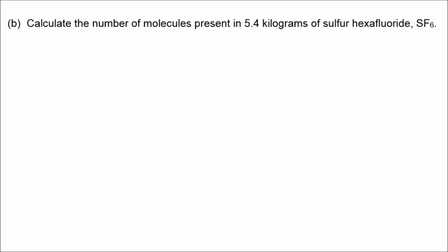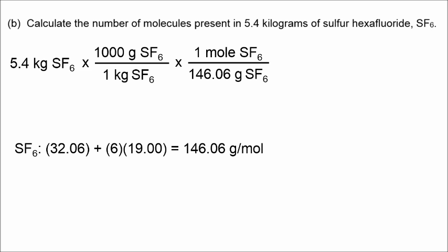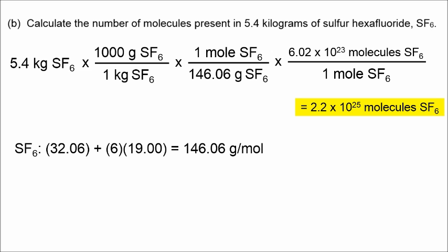All right. This is still number 9, B. We're going to convert from 5.4 kilograms of sulfur hexafluoride into molecules. Let's go from kilograms to grams using our knowledge of the metric system. There's 1,000 grams in one kilogram. Let's go from grams to moles, and that would be 1 sulfur plus 6 fluorines. 146.06 is the molar mass of this compound. And then finally, Avogadro's number gets us from moles to molecules. Rounding our answer off to two significant figures, 2.2 times 10 to the 25th molecules of sulfur hexafluoride.